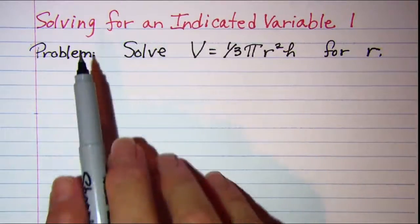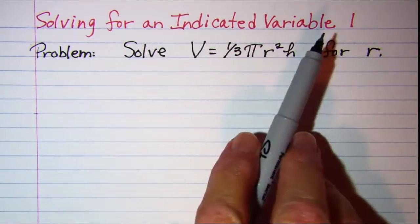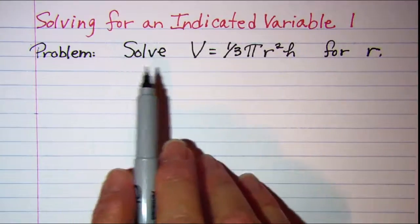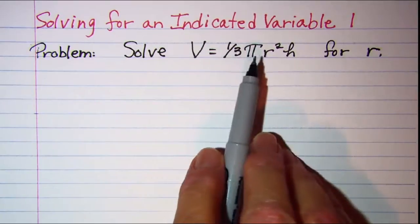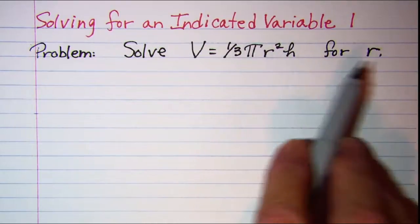In this video we'll be solving for an indicated variable. Our problem is to solve V equals one-third pi r squared h for r.